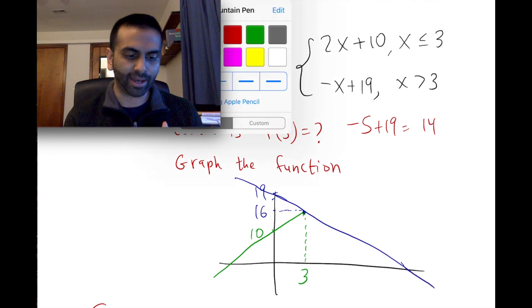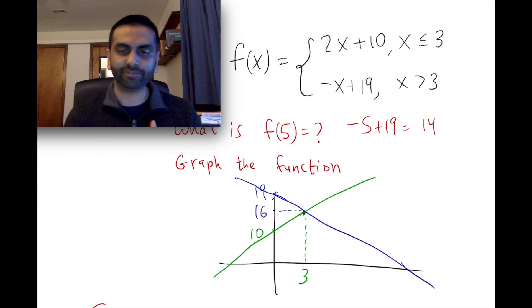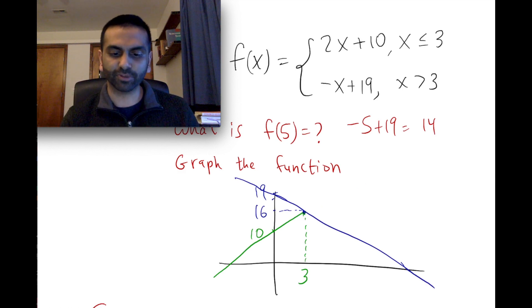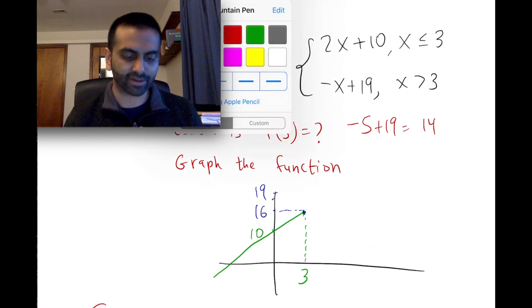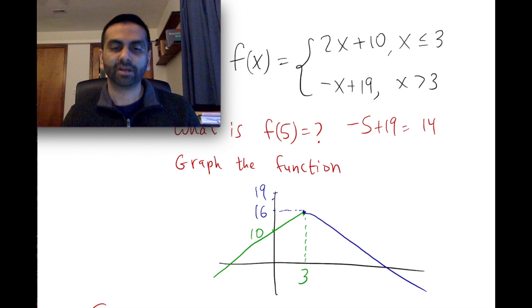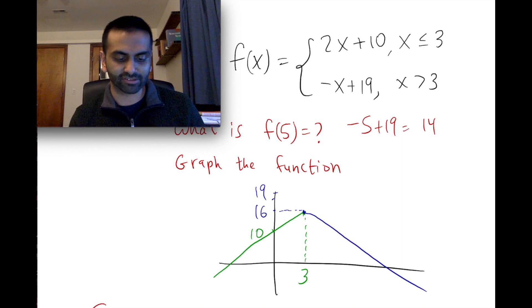So essentially in a way it's like this green function you're only looking at to the left of 3, so we're cutting it off there, but this blue function, you're only looking at it to the right of 3. So overall, the way to graph this function is it's this upward sloping line up until 3 and then it's continuous because both of these are at 16 at the turning point, but then it's a sharp corner and now it's this downward sloping line.